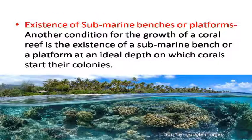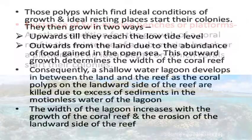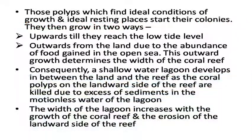Existence of submarine benches or platforms: Another condition for the growth of a coral reef is the existence of a submarine bench or platform at an ideal depth on which corals start their colonies. Those polyps which find ideal conditions for growth and ideal resting places start their colonies.